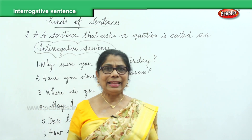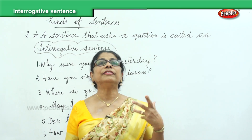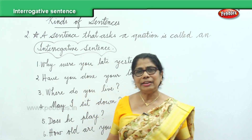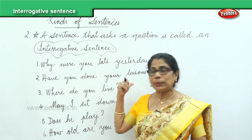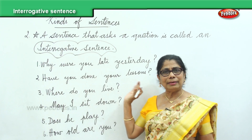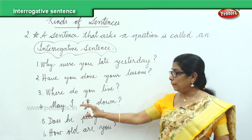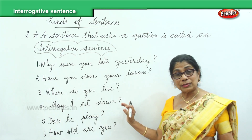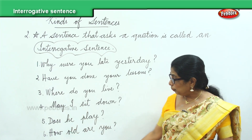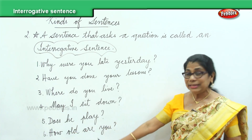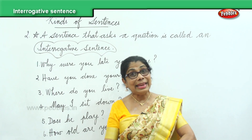Any sentence that asks a question we call an interrogative sentence. Here we have six interrogative sentences: Why were you late yesterday? Have you done your work? Where do you live? May I sit down? Does he play? How old are you? Each one begins with a capital letter and ends with a question mark. All these six sentences are interrogative sentences, beginning with a capital letter and ending with a question mark.